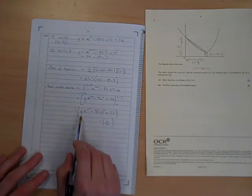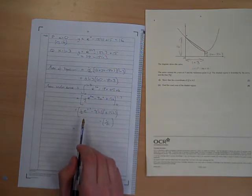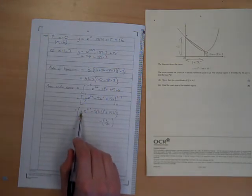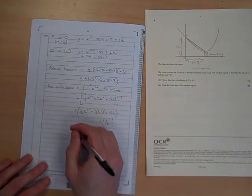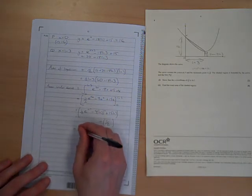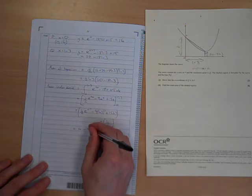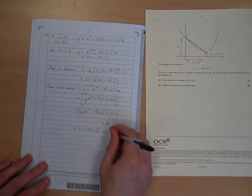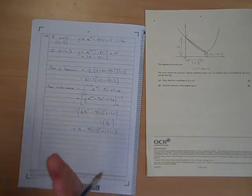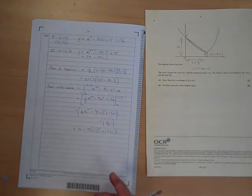So what have we got there? We've got... That's 9, so that's 9 over 2. Take away a half is 8 over 2, so 4 minus 9ln3 squared plus 15ln3. Notice ln3 all squared isn't the same as ln3 squared.